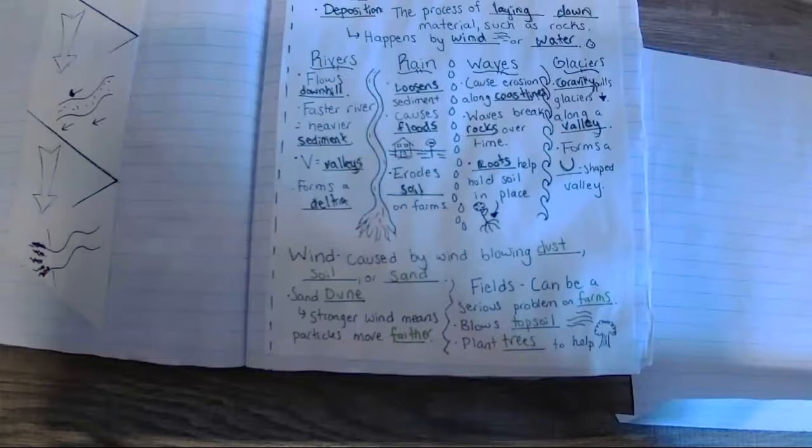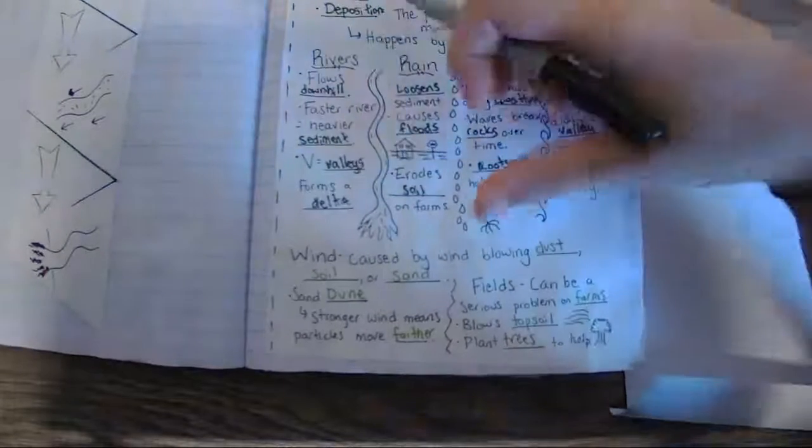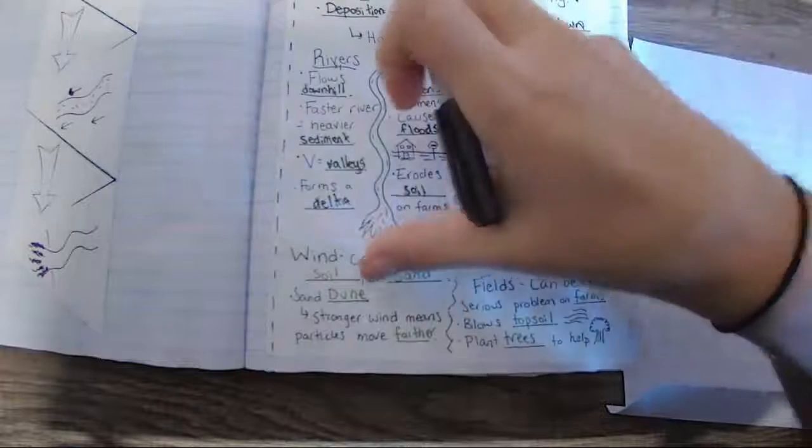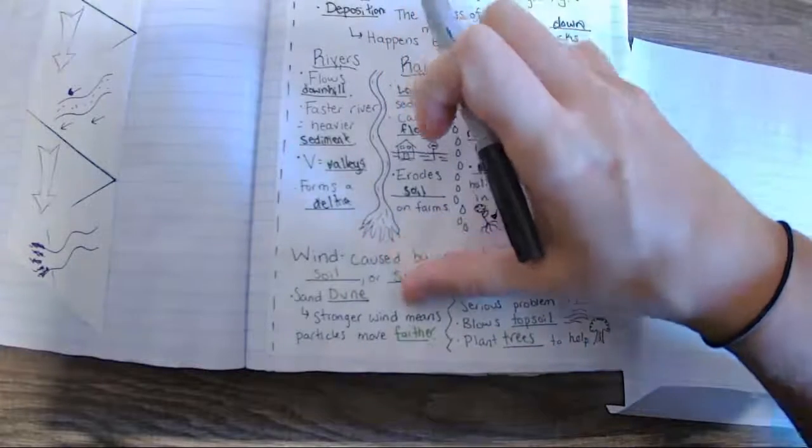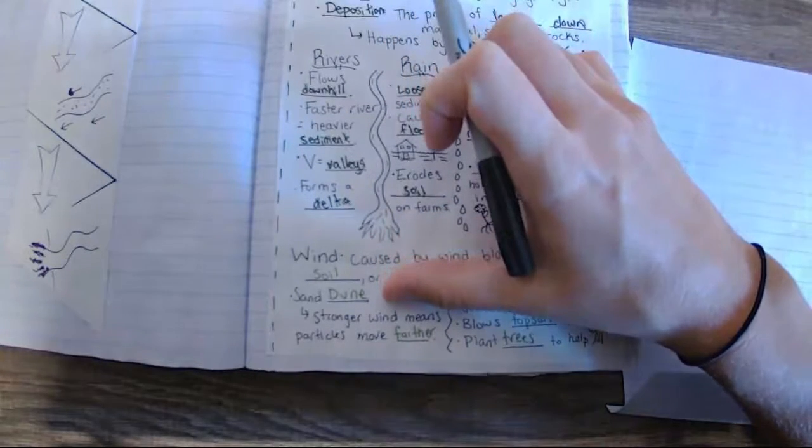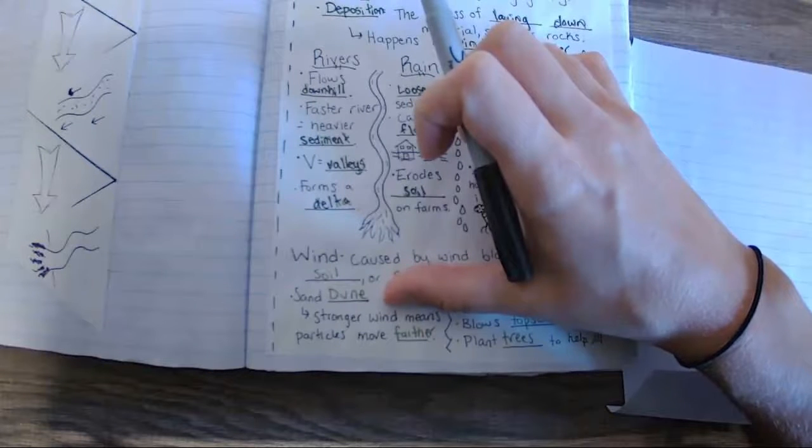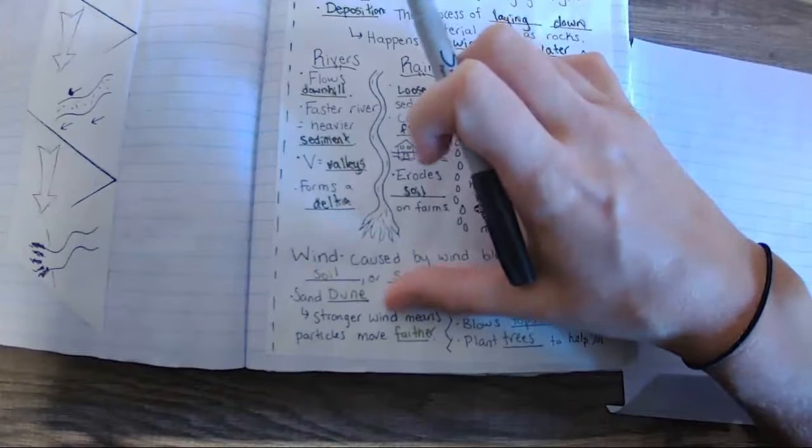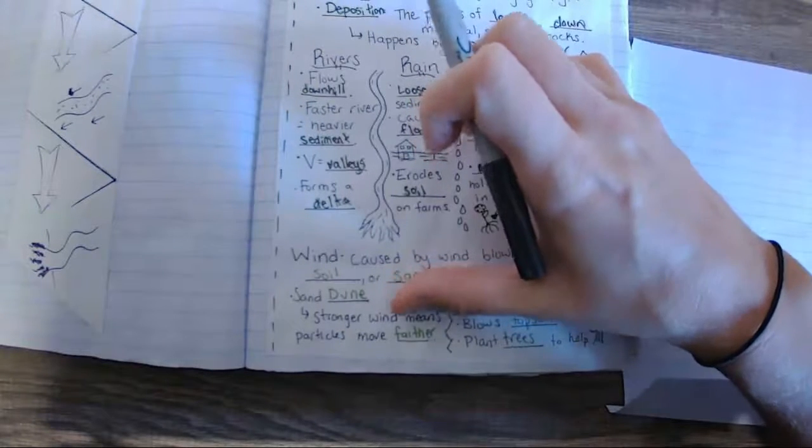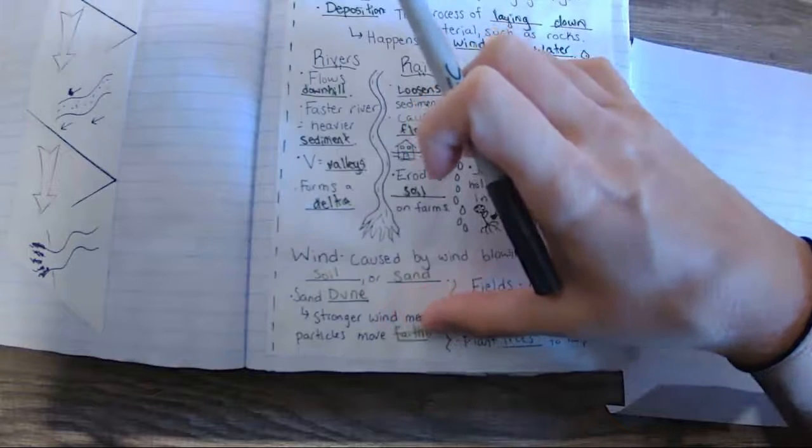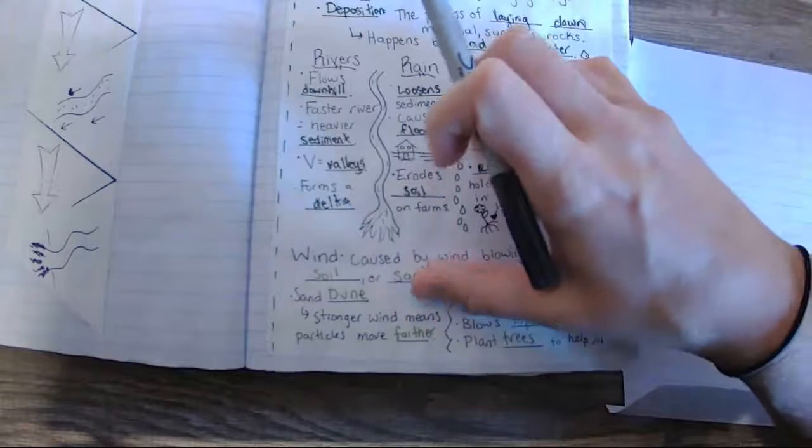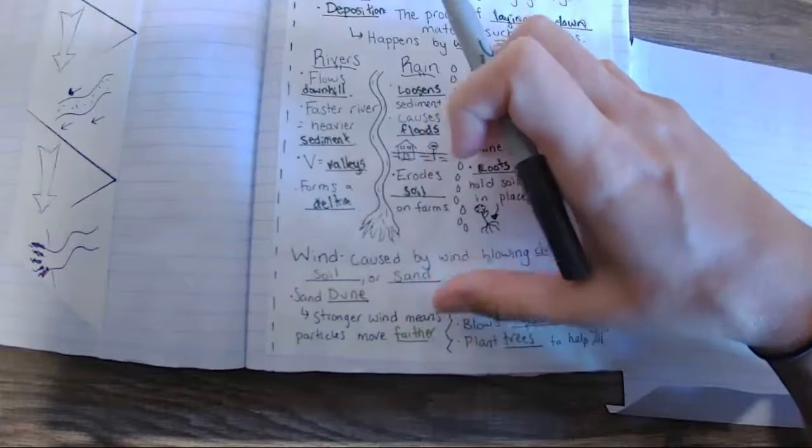In our last section of our notes here, we have wind. Wind can cause by wind blowing dust, soil, or sand. One of these is often seen in a sand dune. So you'll probably think of these in deserts, but they are sometimes also along beaches and things. Stronger winds mean that the particles can be pushed even farther. So bigger particles can be pushed even farther when it's really windy.